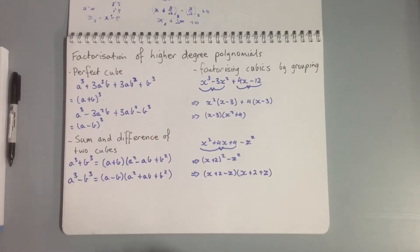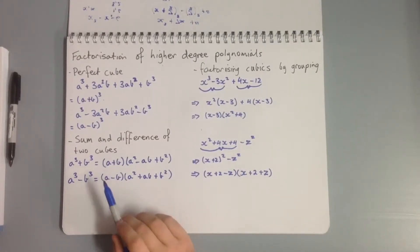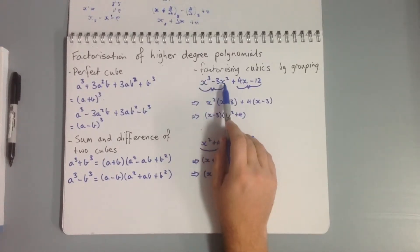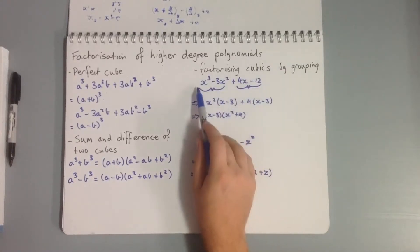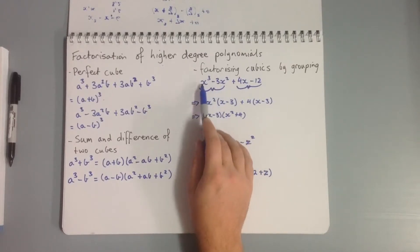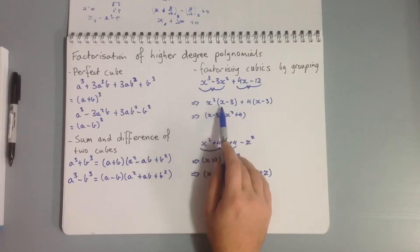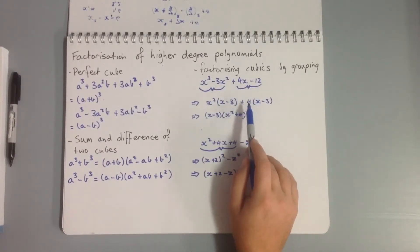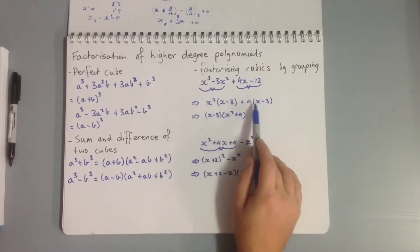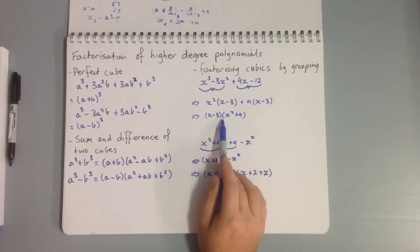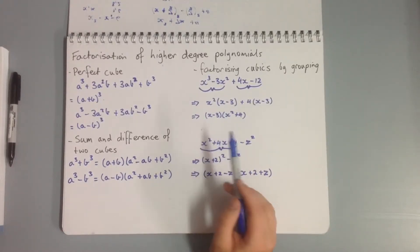Another approach that doesn't always work is factorizing cubics by grouping. For example, x³ - 3x² + 4x - 12: we put it in two groups. The first group we factor out x², giving x²(x - 3). The second group we factor out 4, giving 4(x - 3). Now we have the common factor (x - 3), so we get (x - 3)(x² + 4).